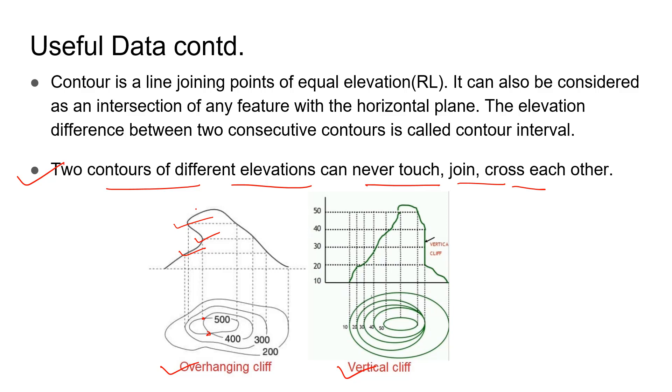In the overhanging cliff, this opposes the above statement, and same with the vertical cliff. Here the slope is uniform, but here it's not uniform as it's a vertical cliff. The contour lines coincide at this point. In overhanging cliff and vertical cliff, the contours touch each other at some points, which is an exception to the above statement.